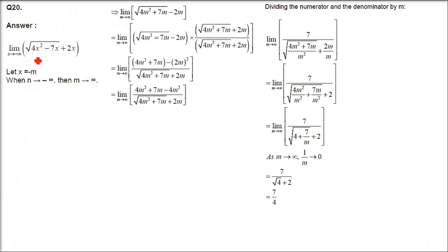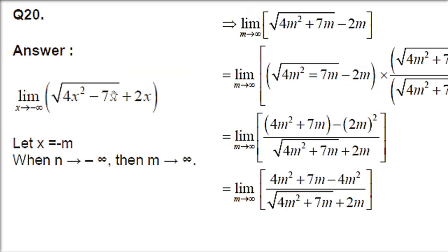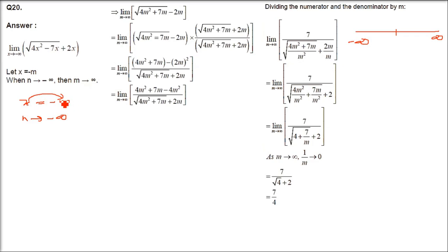Now the next one is question number 20. Note that question 20 and 21 are exactly the same type. The concept here: when you have limit x tends to minus infinity of under root(4x² minus 7x) plus 2x, x is tending to minus infinity — that is the left side. So we first have to convert this minus infinity into plus infinity.